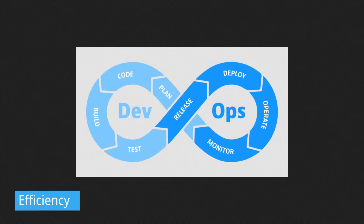A well-defined pipeline allows an organization to streamline its software development and deployment process, resulting in faster delivery of new features and updates to its users. This can help organizations stay competitive and meet the demands of their customers.